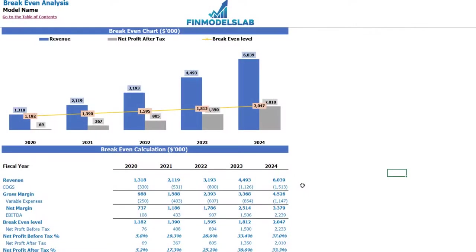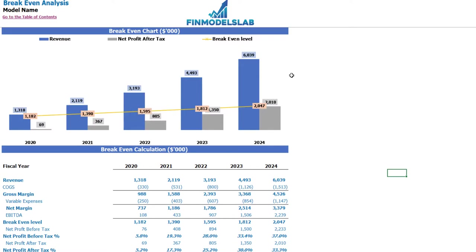On the break-even tab you may find the calculation of the revenue break-even level and a break-even chart. In this particular use case you may find that the revenue break-even level is less than the actual revenue calculation, which means the company is profitable.